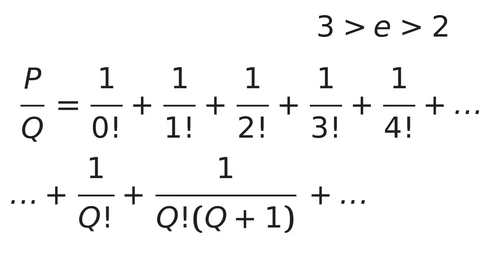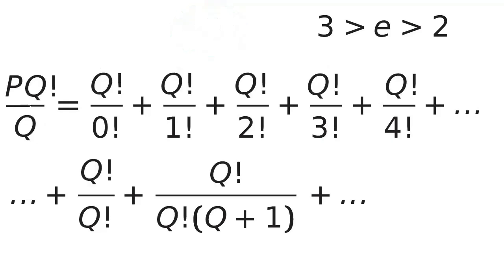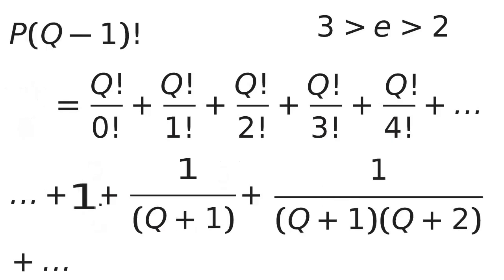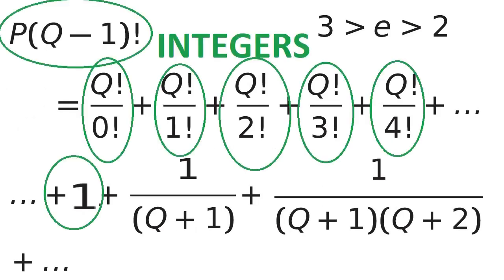If we follow the series far enough, eventually we'll find a term with q factorial in the denominator. Let's multiply the whole works by q factorial. Simplify, and we are left with this sum. Since p and q are integers, each of these terms is itself an integer. Q factorial is the product of all the integers from 1 to q, so each lesser factorial must divide q factorial.